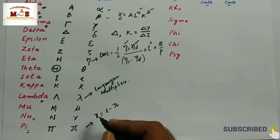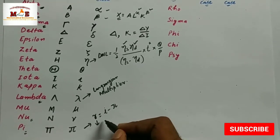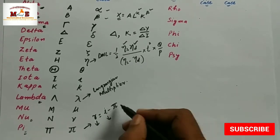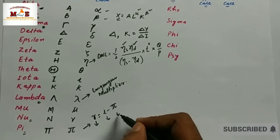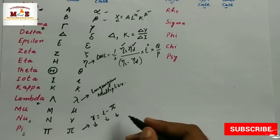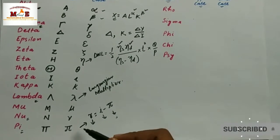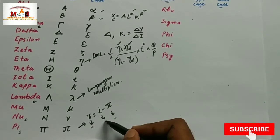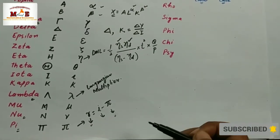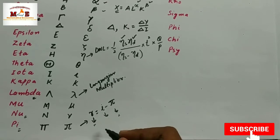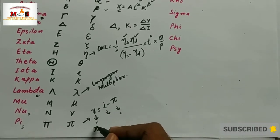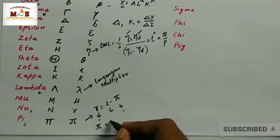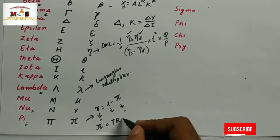For example, r equals i minus pi, where r is the real interest rate, i is the nominal interest rate, and pi represents the rate of inflation. Thus, real interest rate equals nominal interest rate minus rate of inflation. Pi is also used to represent profit, where pi equals total revenue minus total cost.